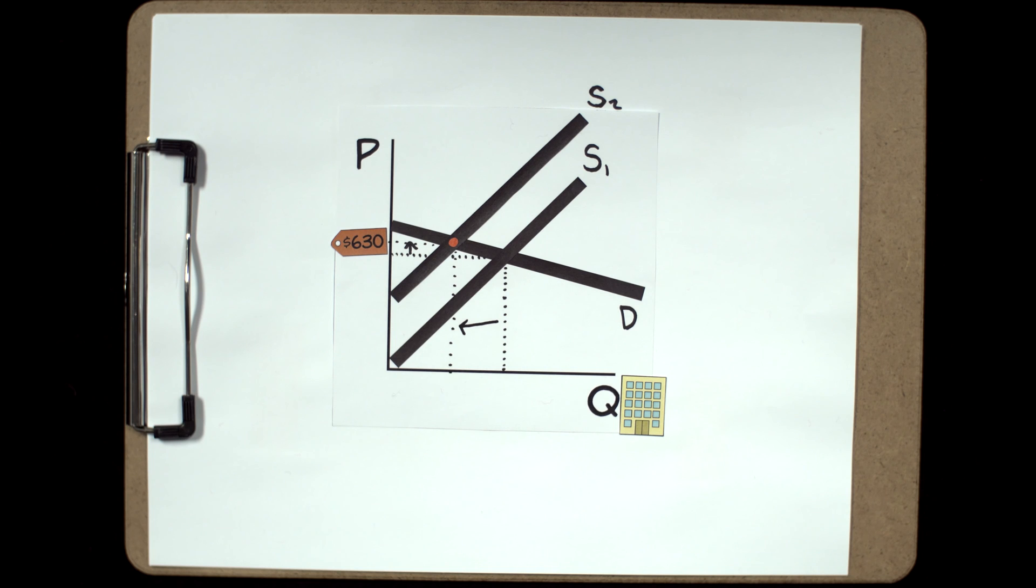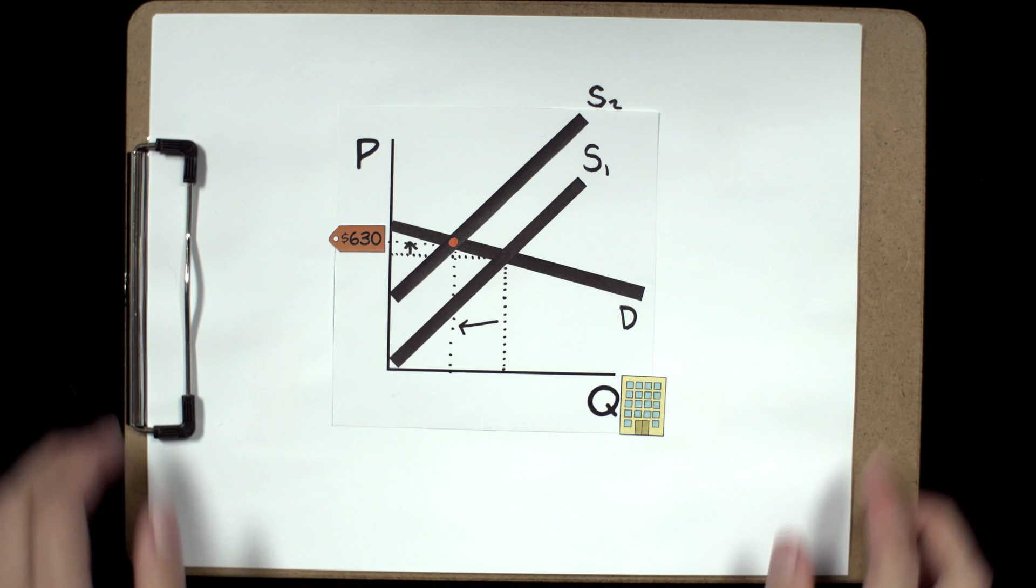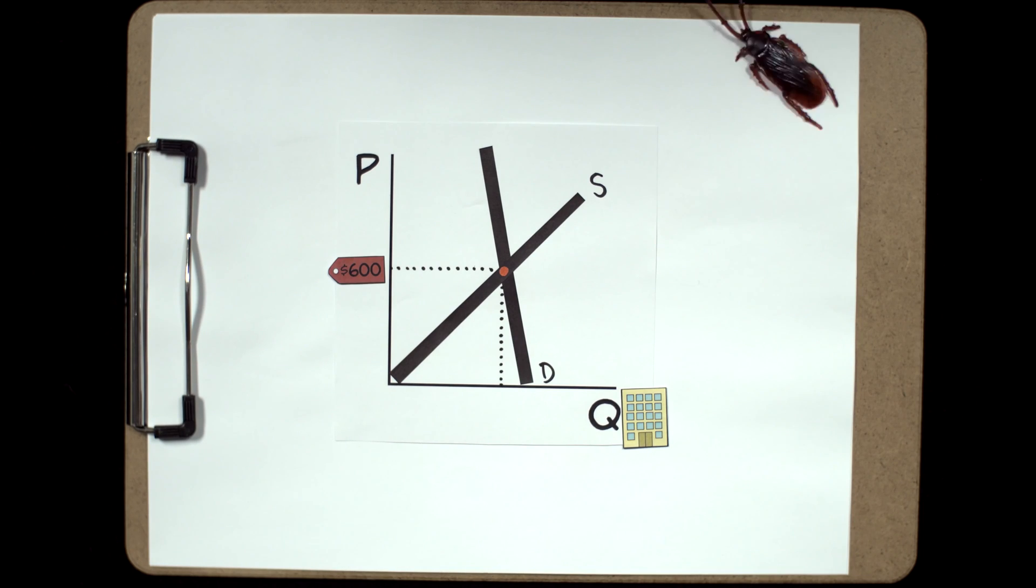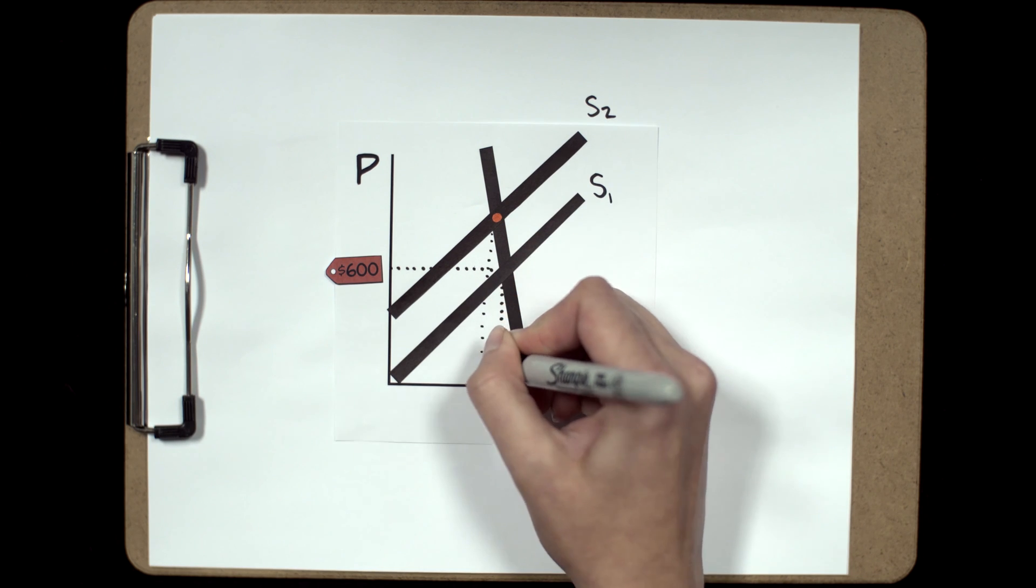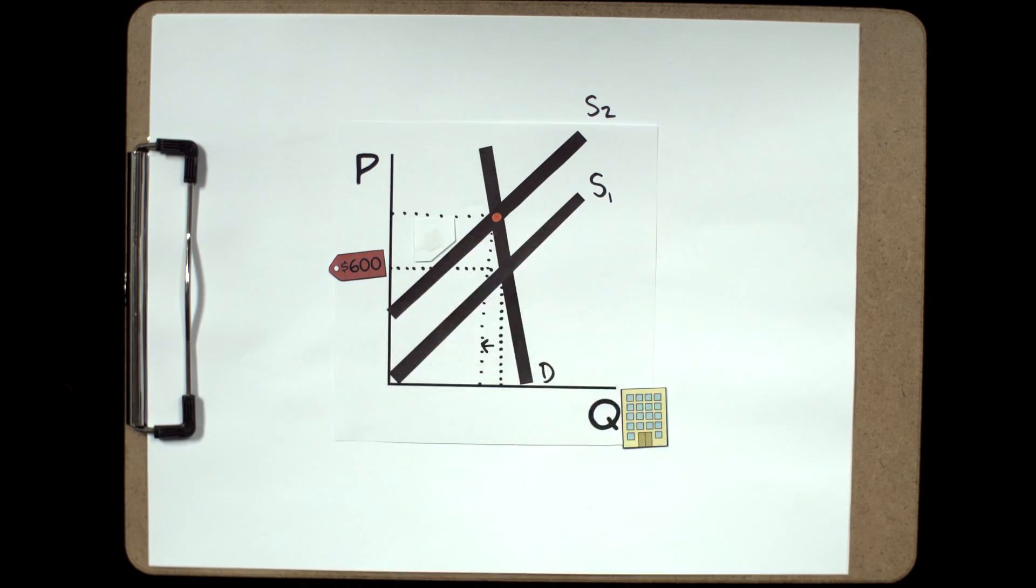Once again, elastic demand means consumers are very responsive to changes in price. But if the demand curve were inelastic, closer to looking like an eye, even a small decrease in quantity would trigger a large increase in price.